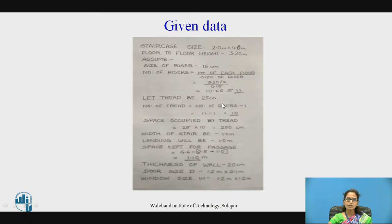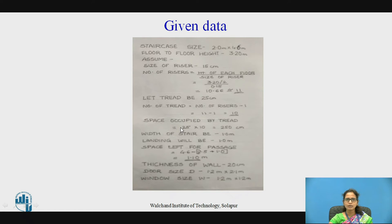Note that number of treads is less than number of risers. Assuming tread size as 25 cm, number of treads equals number of risers minus 1, that is 11 minus 1 equals 10 treads. The space occupied by the treads is 25 cm multiplied by 10, giving 250 cm.